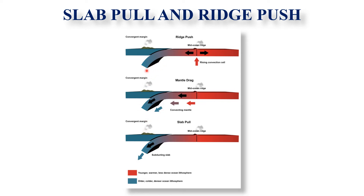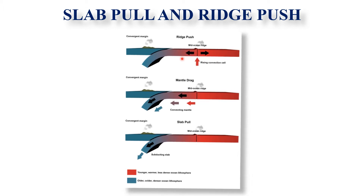The oceanic slabs are roughly two percent denser than the underlying asthenosphere. Another important force is ridge push. This occurs along the mid-oceanic ridges. This gravity-driven mechanism results from the elevated positions of the oceanic ridge, which causes slabs of lithosphere to slide down the flanks of the ridge. Ridge push appears to contribute far less to plate motion than slab pull.